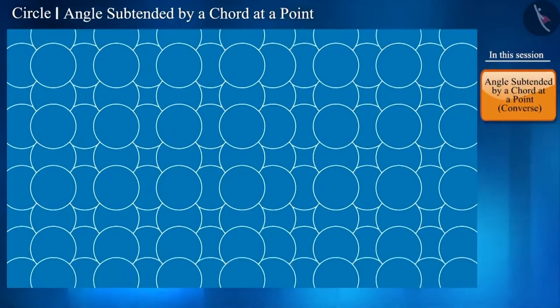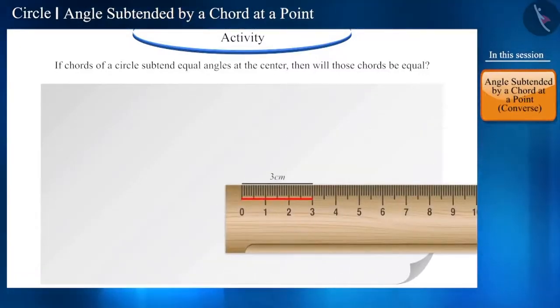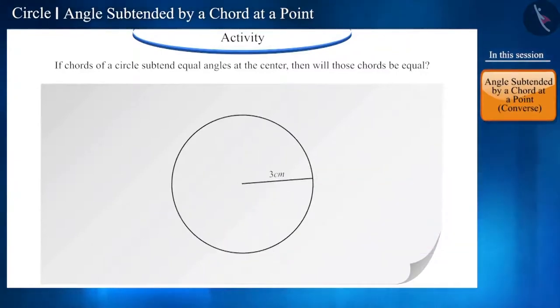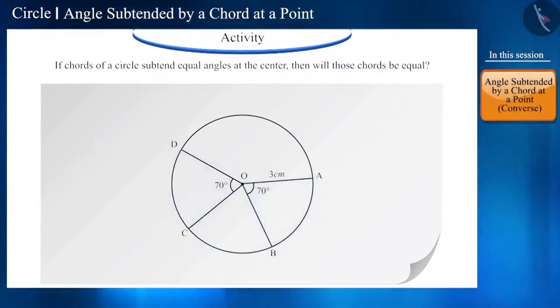Let us find out through an activity. Friends, draw a circle of radius 3 cm on a paper with center O. Now, with the help of scale and protractor, make two angles at the center like this. Whose measurement is equal?